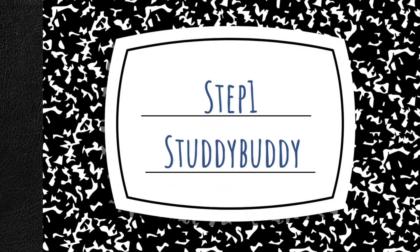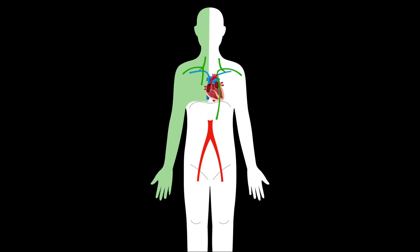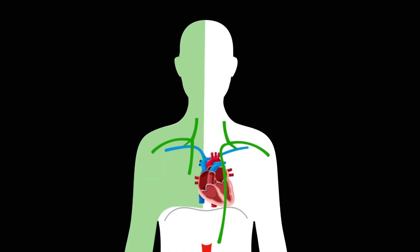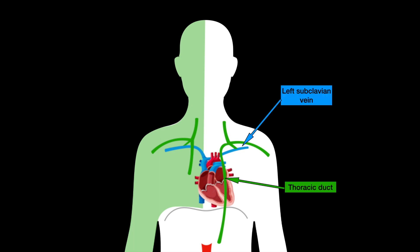Welcome to the Subpoint Review Study Guide. In this video, we learn about lymphatic drainage associations. The right lymphatic duct drains the right side of the head, the right arm, and the right thorax into the right subclavian vein. The thoracic duct drains the rest of the body into the left subclavian vein.